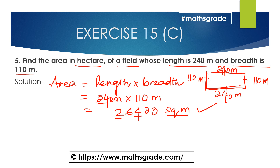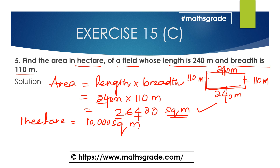Now we have to find the area in hectares. The area is currently in square metres, so we need to convert. We know that 1 hectare equals 10,000 square metres.